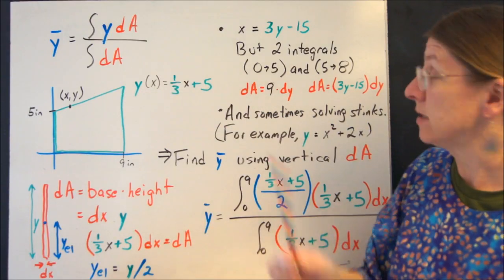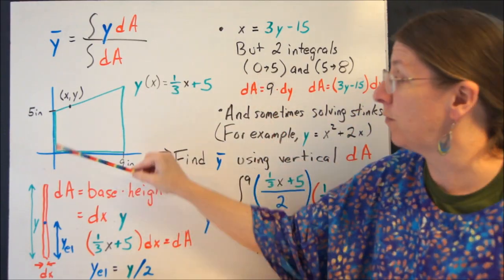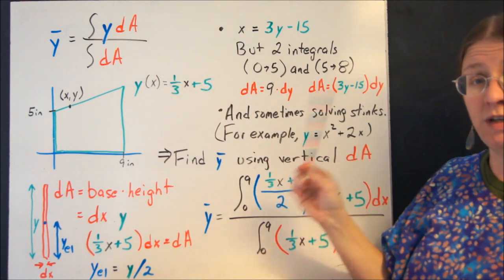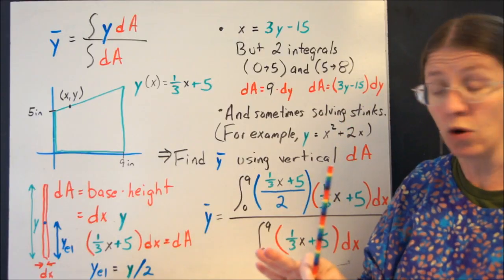Now, you have two choices. You can do two integrals. This one will go from 0 to 5 and then from 5 up to 8 with two different dAs and add them up. That's fine. That works.